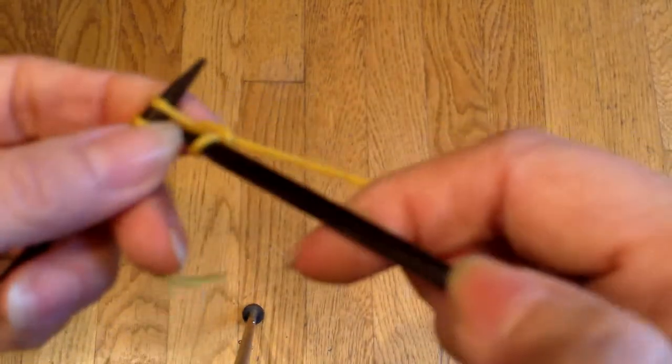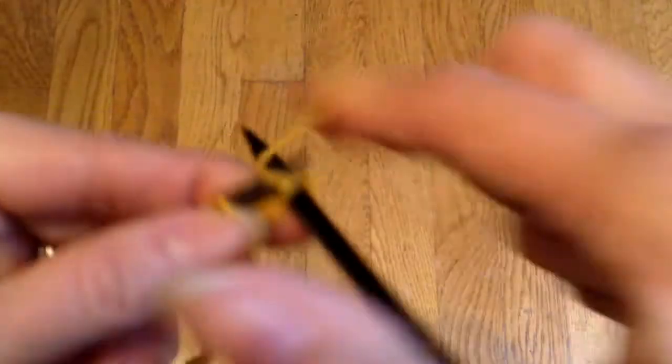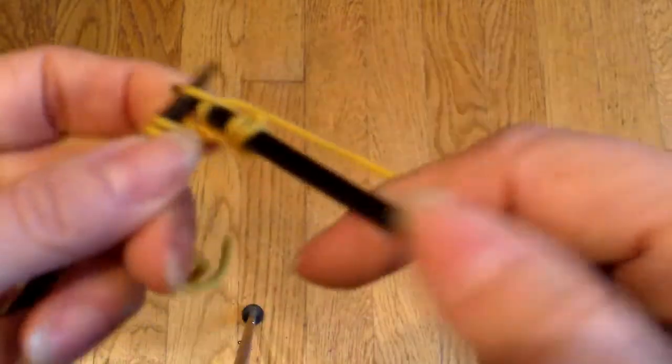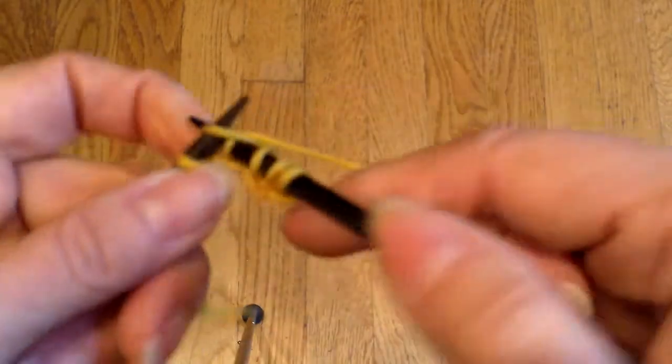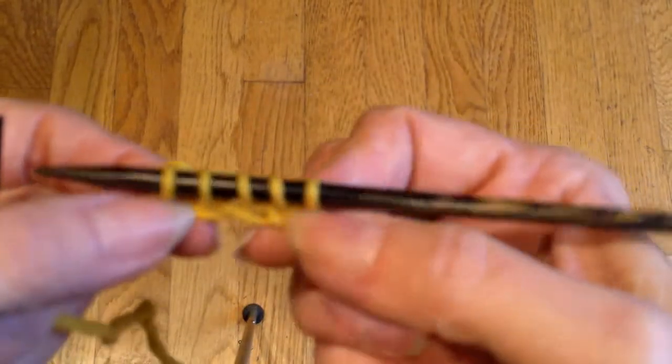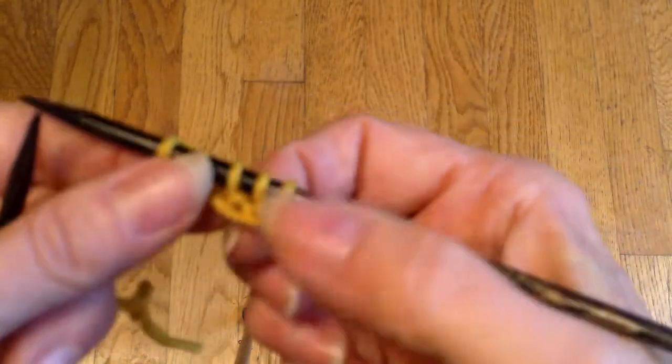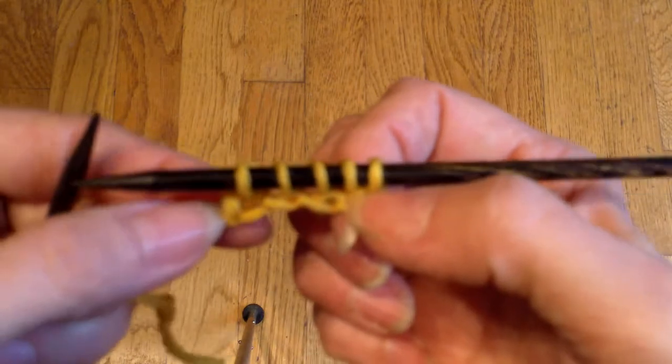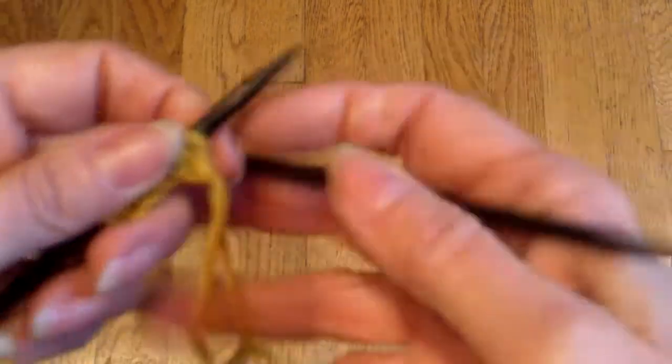Now I'll go ahead and work a few stitches so we can see what it looks like when it's worked. This is a nice, loose cast-on, you can see. So if I'm doing something like lace that's going to drape down a bit, this might be one to consider.